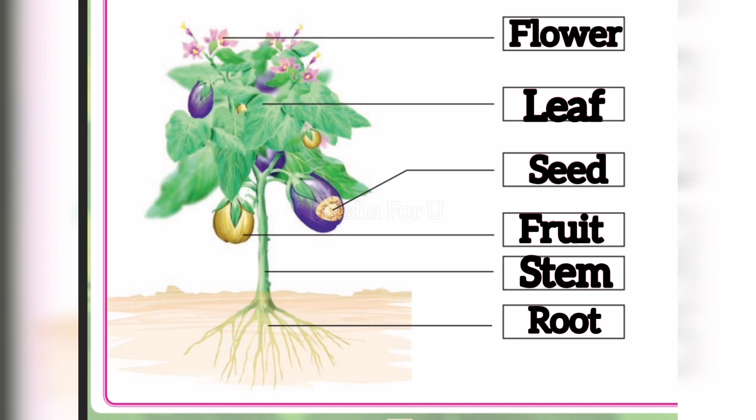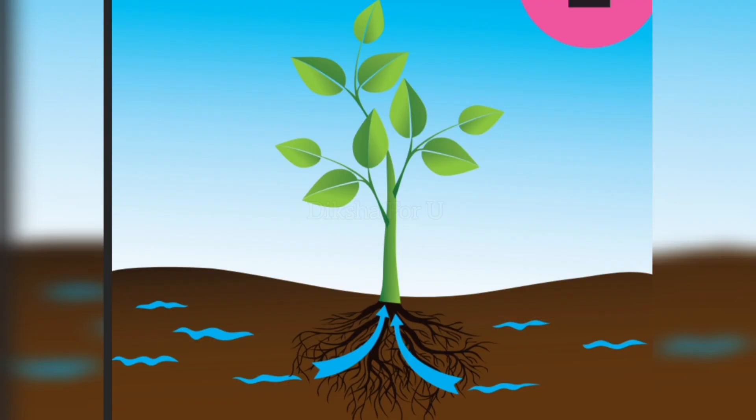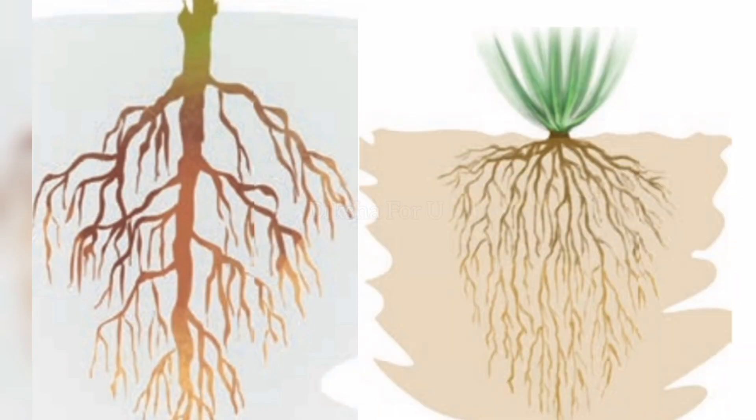First, let's look at the roots. Roots are below the soil. Roots hold the plants firmly in the soil. They absorb water and minerals from the soil. There are two kinds of roots: tap root and fibrous root.